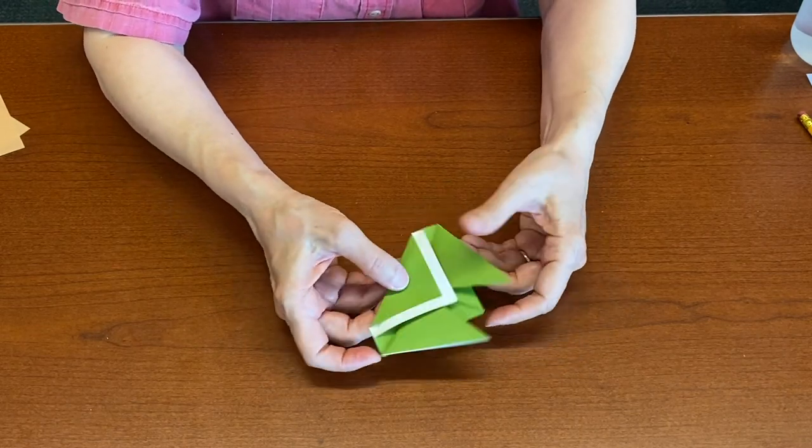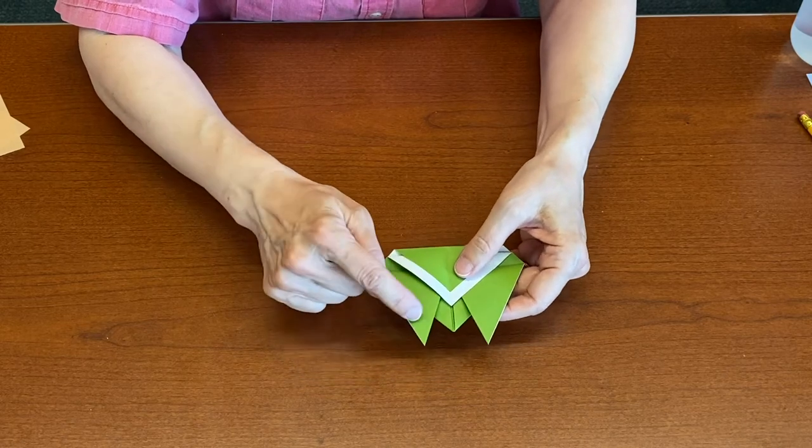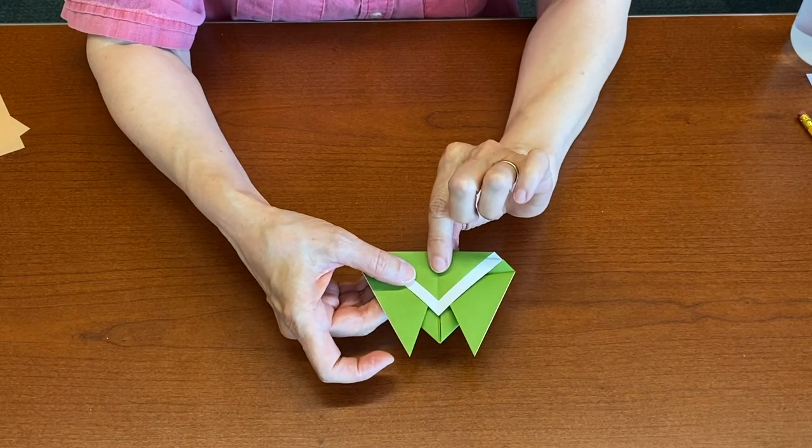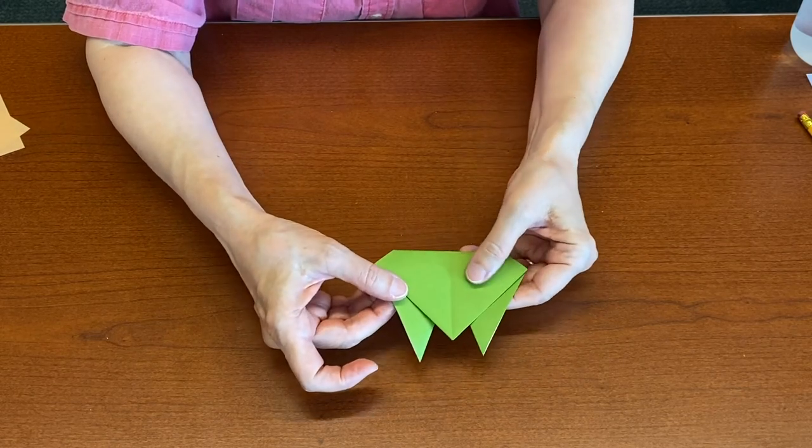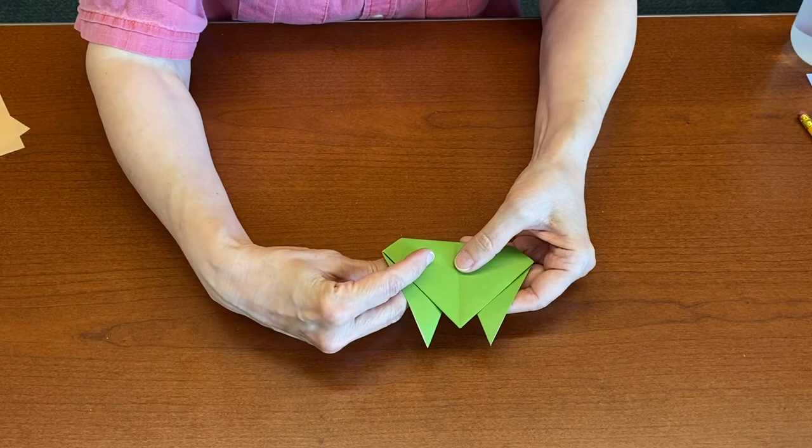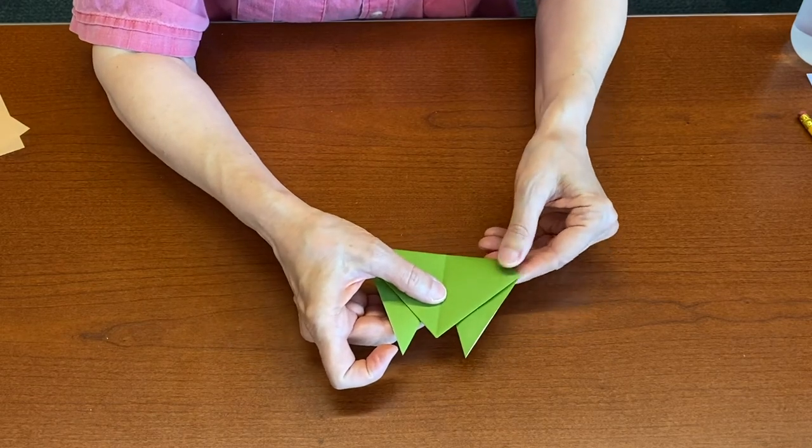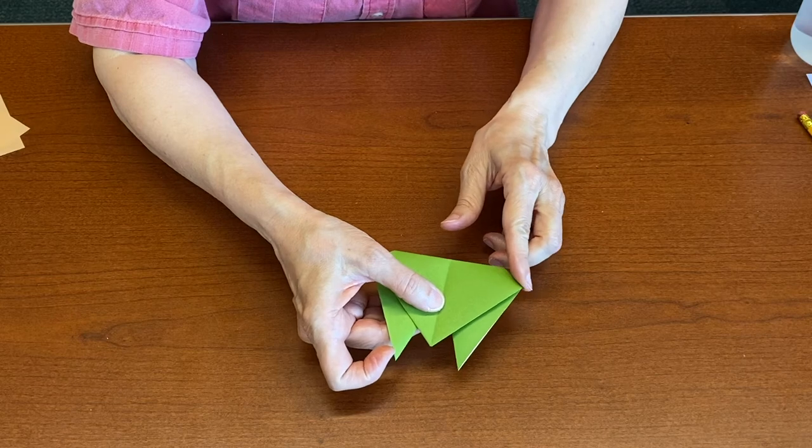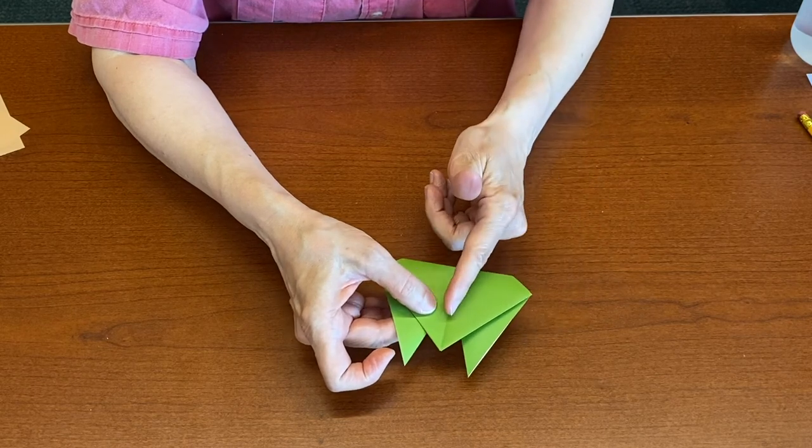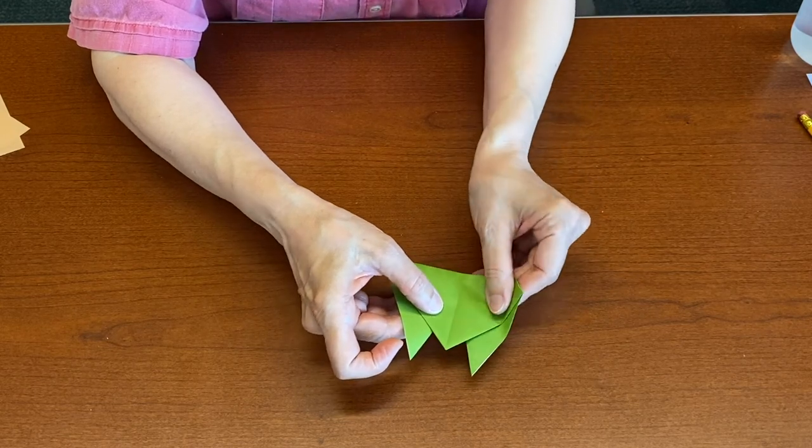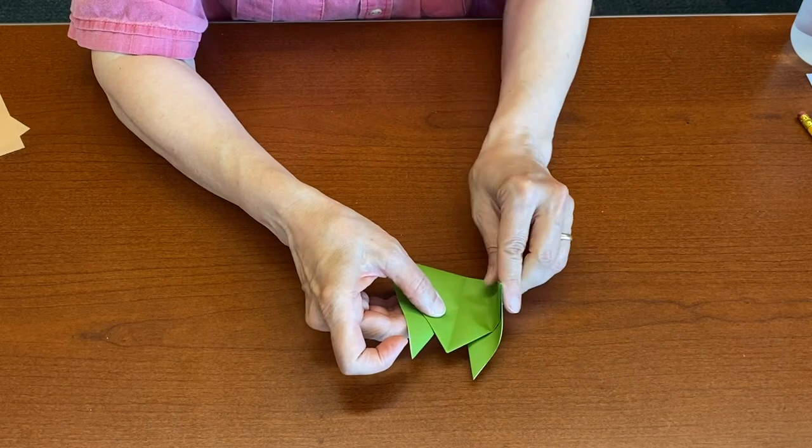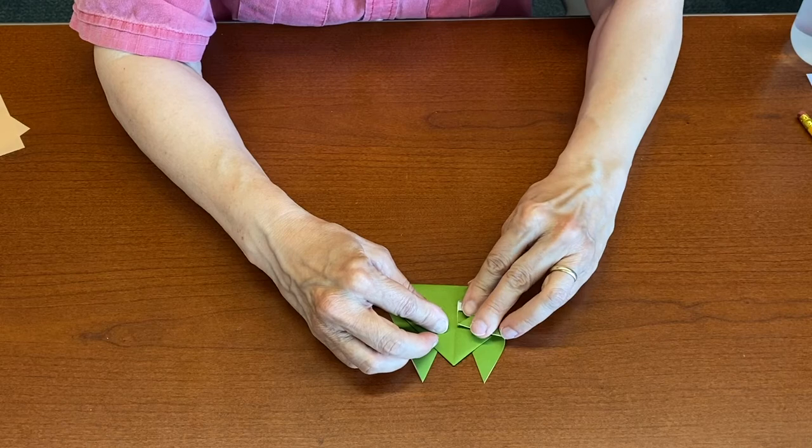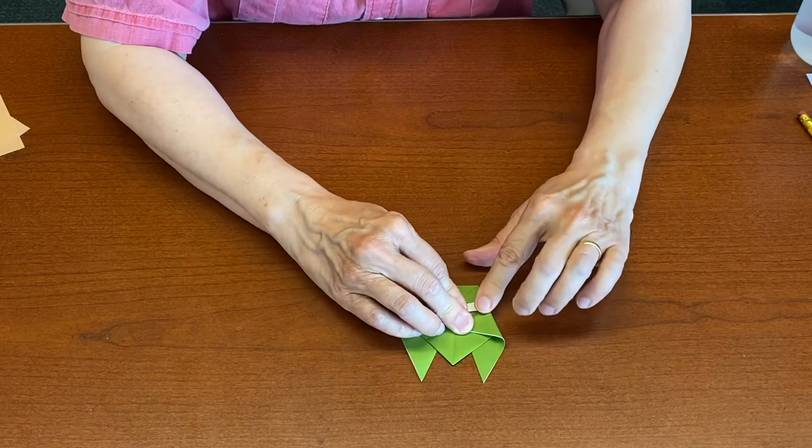Rotate the model. These will be the wings, the tail, and the head area. Turn the model over. And we're going to fold the sides in. I'll start on the right. We're going to fold the sides in so that this short straight edge here will align with the center. Like so. It doesn't have to actually touch the center.